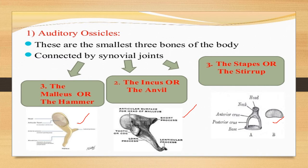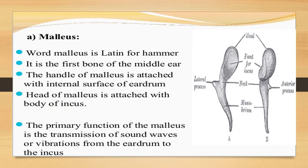The ossicles are connected by synovial joints. The malleus is hammer-shaped, the incus is also called the anvil, and the stapes is called the stirrup. These ossicles act as a lever system, increasing the force of vibration — acting as mini amplifiers. The tympanum membrane amplifies the sound, which is received by the ossicles with increased amplification and sent into the inner ear. The handle of the malleus is attached to the internal surface of the eardrum, and its head is attached to the body of the incus. The primary function of the malleus is transmission of sound waves from the eardrum to the incus.